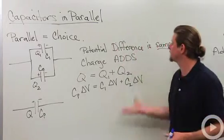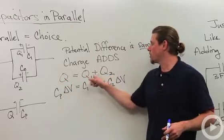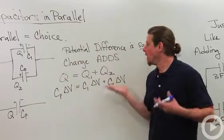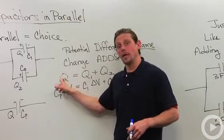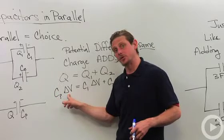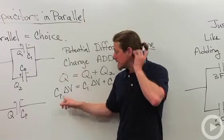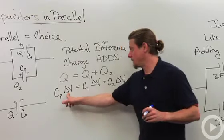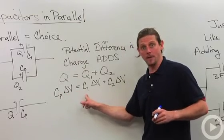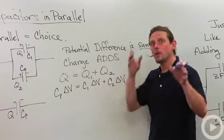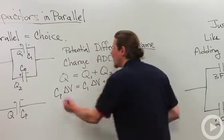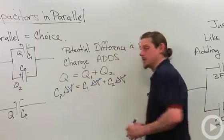All right, so let's look and see what happens. Q equals Q1 plus Q2. So since Q is equal to capacitance times potential difference, we write C parallel delta V equals C1 delta V plus C2 delta V. Potential difference is the same, so delta V cancels.